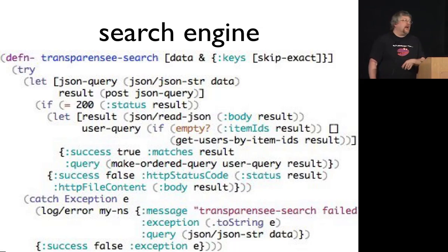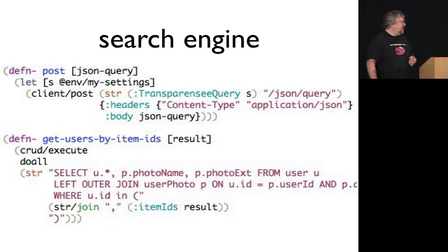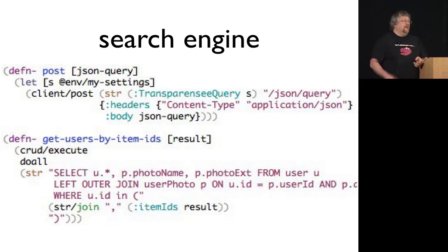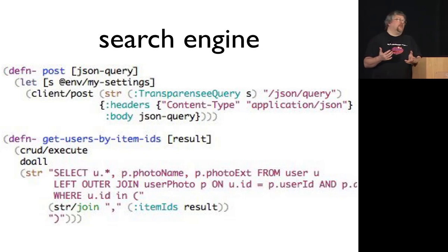If we get results back, we fetch all the matching users from the database and make an ordered query so the sequence of maps matches the order from the search engine. For environment control, we use M-slash-my-settings. Something we found we were using a lot is essentially singletons — where a value is computed once the application is up and running and then needs to be cached. After asking on the IRC channel, someone suggested using delay, which turned out to be a very elegant solution — we just deref whenever we need the values.